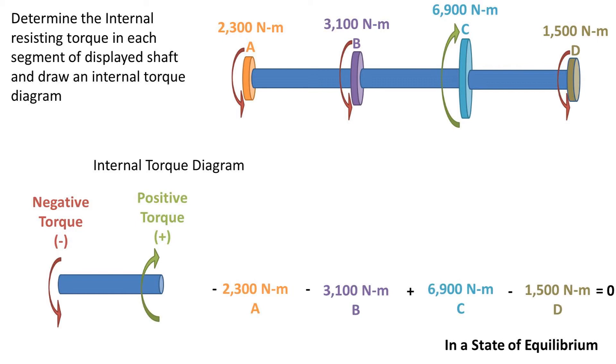We need to make sure that the shaft is in equilibrium, or in other words, all the torques cancel out. In this case, all the torques cancel out.